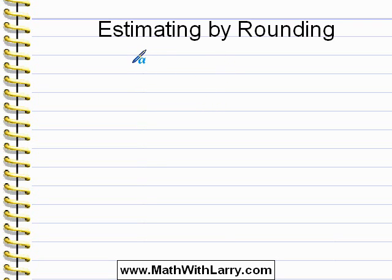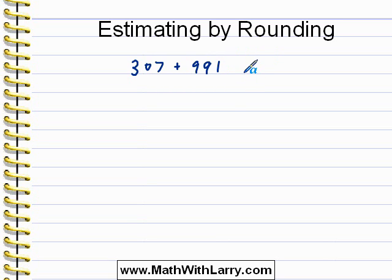Let's say you're told to estimate 307 plus 991. We're not being asked to find the actual answer, we're being asked to estimate. There's no real right or wrong way to do this. What you do is look at each number and decide the most logical way of rounding.